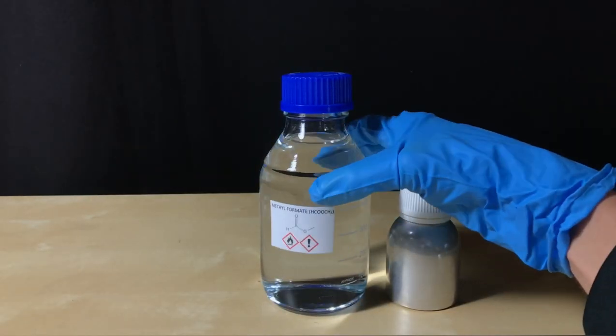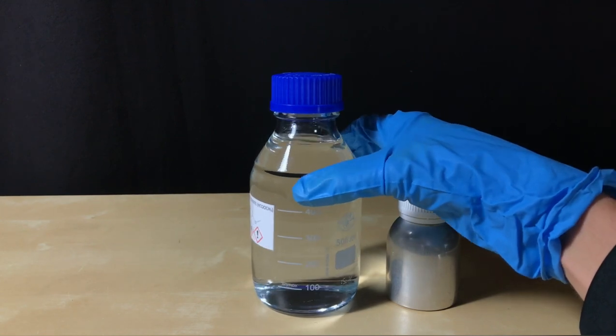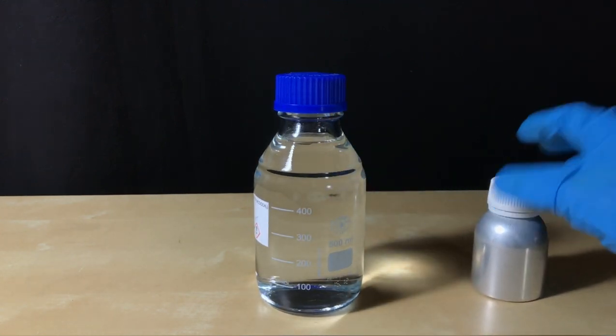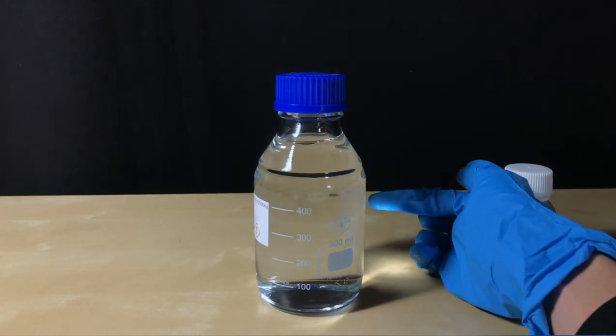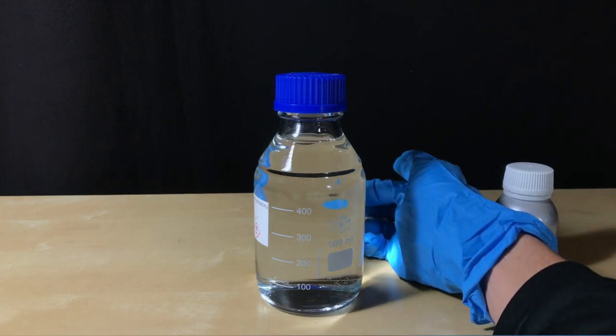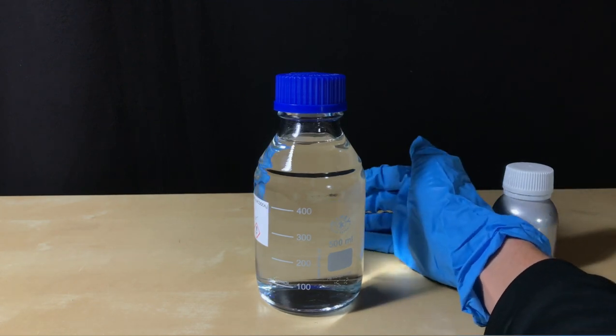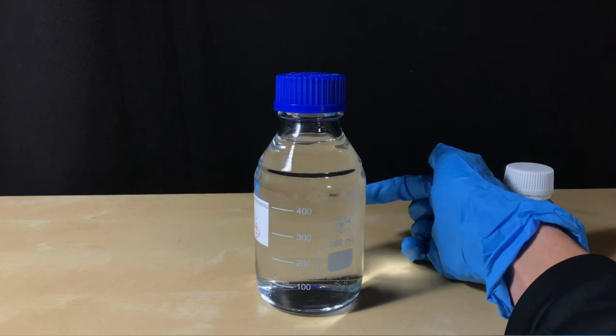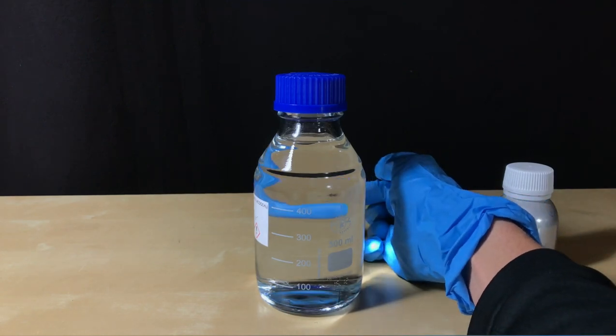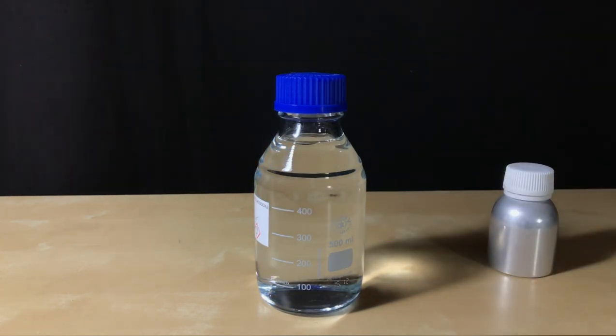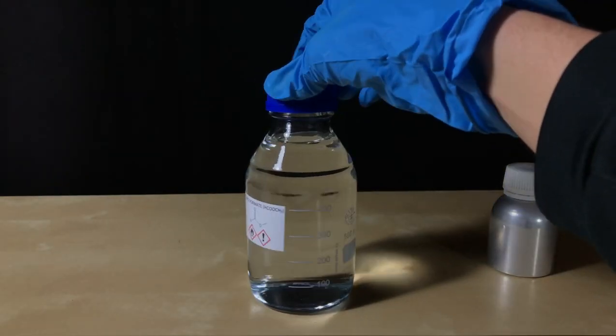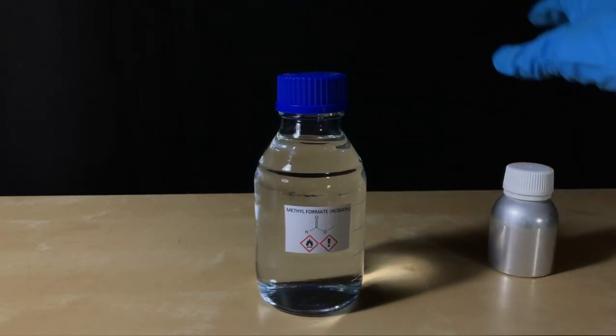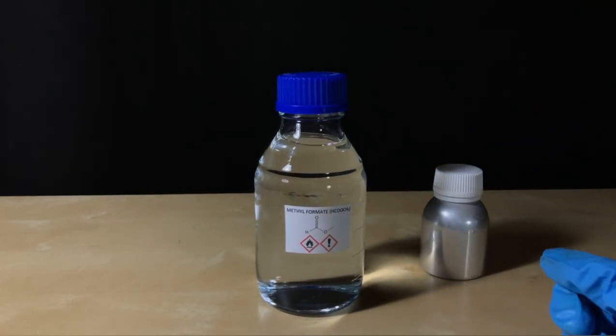As I promised, I'll show you the strange way methyl formate bends light. If I hold my finger behind there, you will first not be able to see it. You have to move it nearly to the middle of the bottle until it becomes visible. Besides that, methyl formate is interesting to look at because it's such a clear liquid. It also smells interesting and fruit-like.